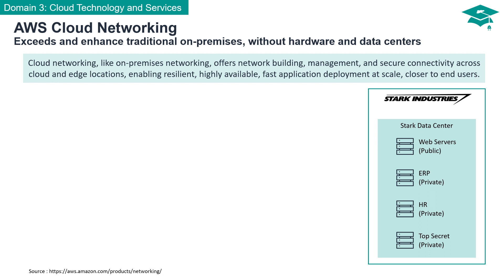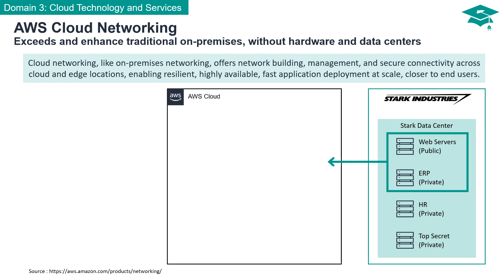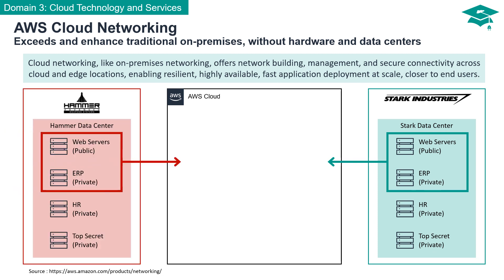Enter Tony Stark, the visionary owner of Stark Industries. He's heard about the immense potential of AWS Cloud services and is contemplating migrating the public web server and ERP server to the AWS Cloud. Tony Stark is forward-thinking, but he's also aware of his competitor, Hammer Industries, who is also considering a migration to the AWS Cloud.